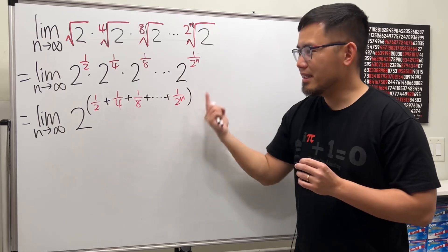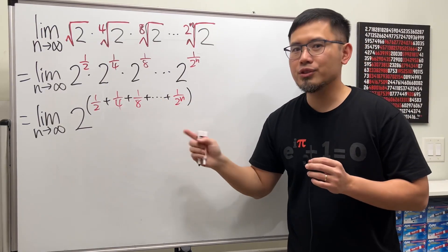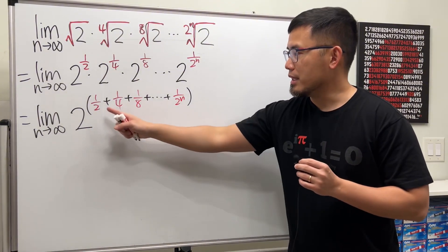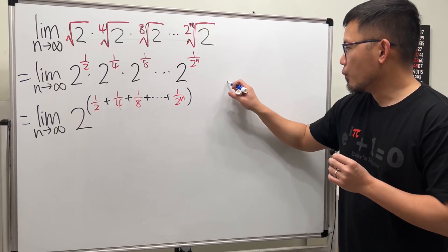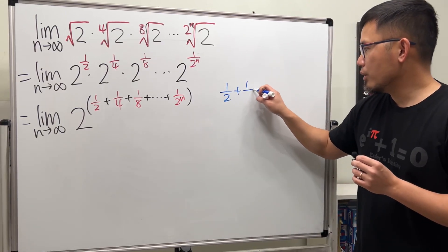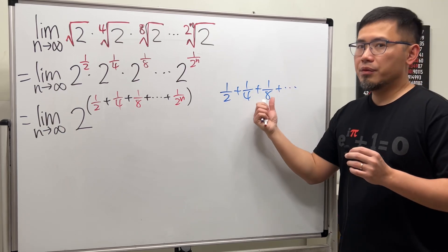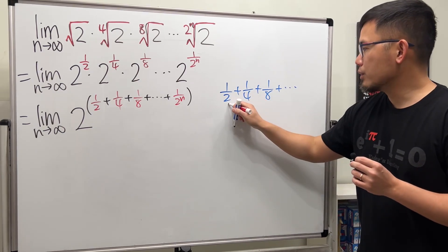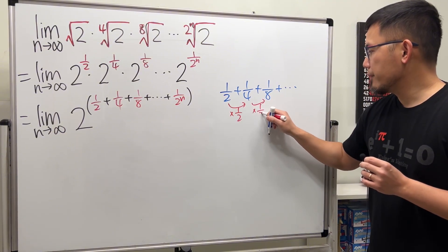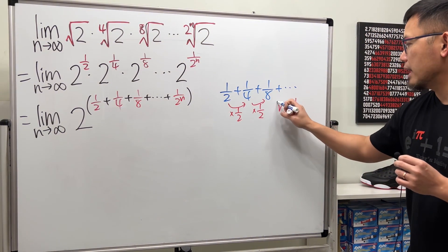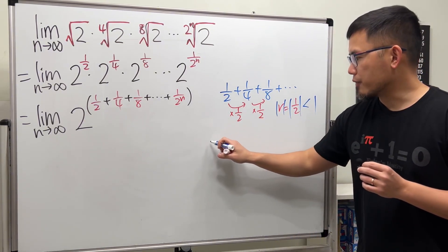Now, this right here is a geometric series. And as n goes to infinity, this will converge because the common ratio is 1 half. So let me just write this down real quick: 1 half plus 1 over 4 plus 1 over 8 and so on. If you just keep going forever, notice the common ratio is just 1 half. So r equals 1 half. The absolute value of r is less than 1, so this will converge.